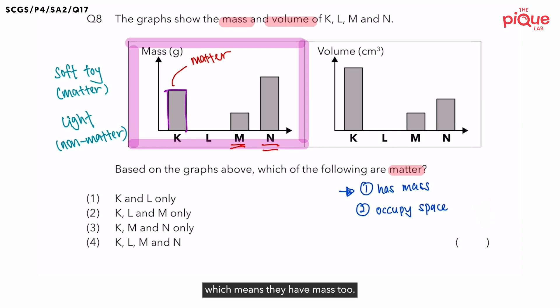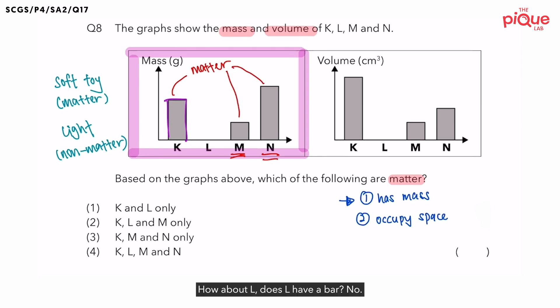So if M and N also have mass, we can also call them matter. How about L? Does L have a bar? No. So if L does not have a bar, does L have mass? No. Since L does not have mass, is L similar to the soft toy or the light? It is similar to the light. So L must be a non-matter.